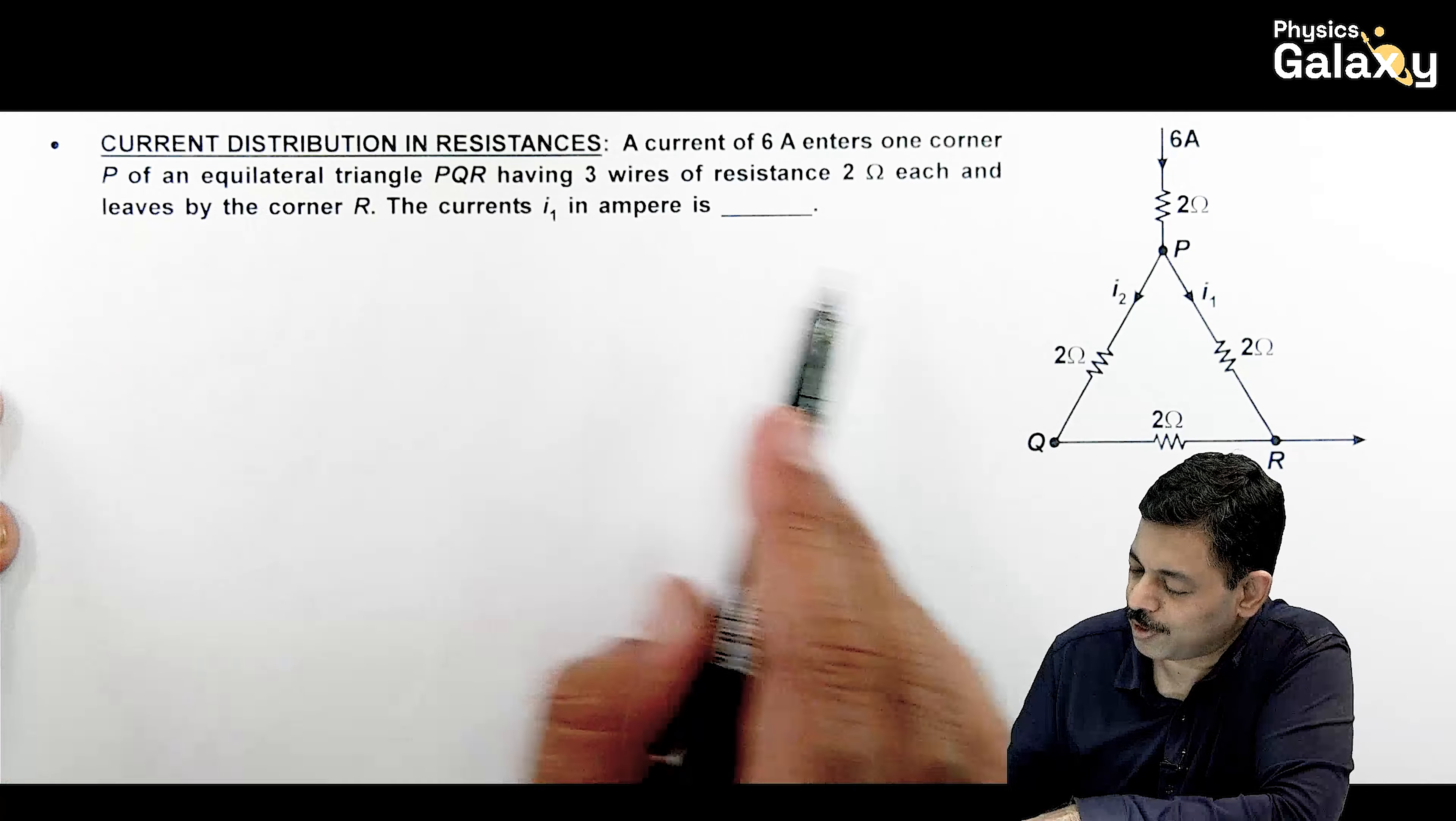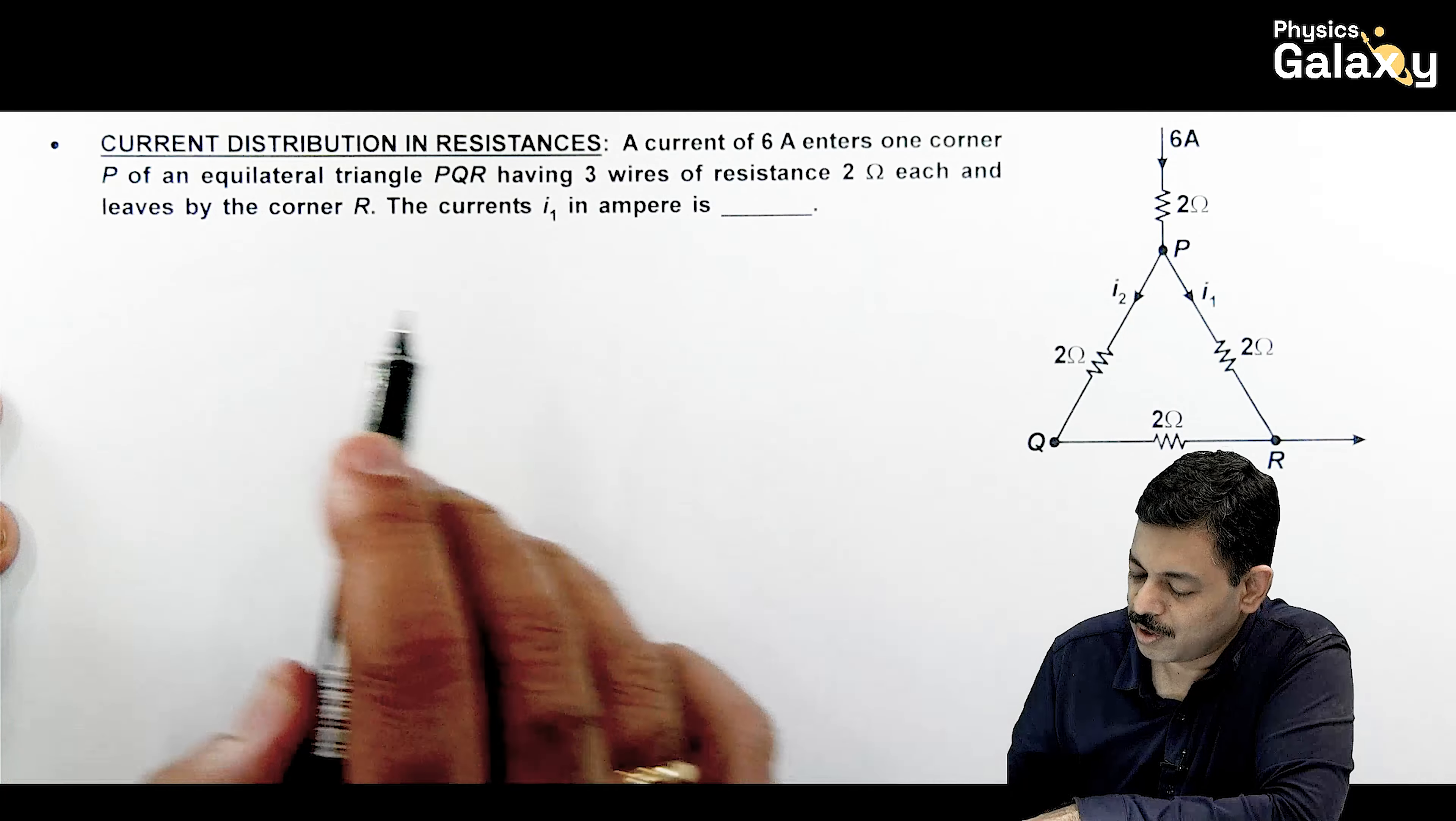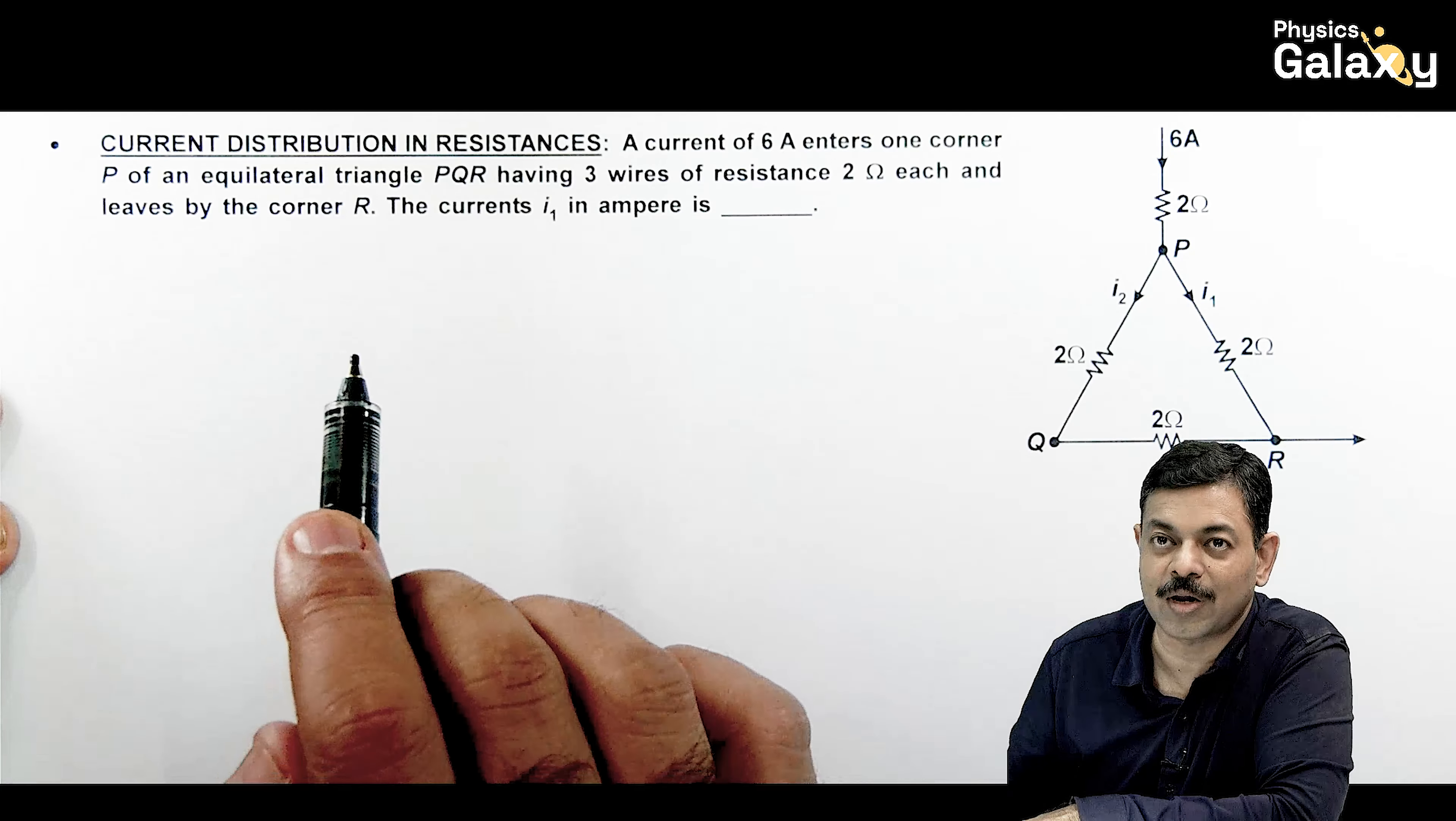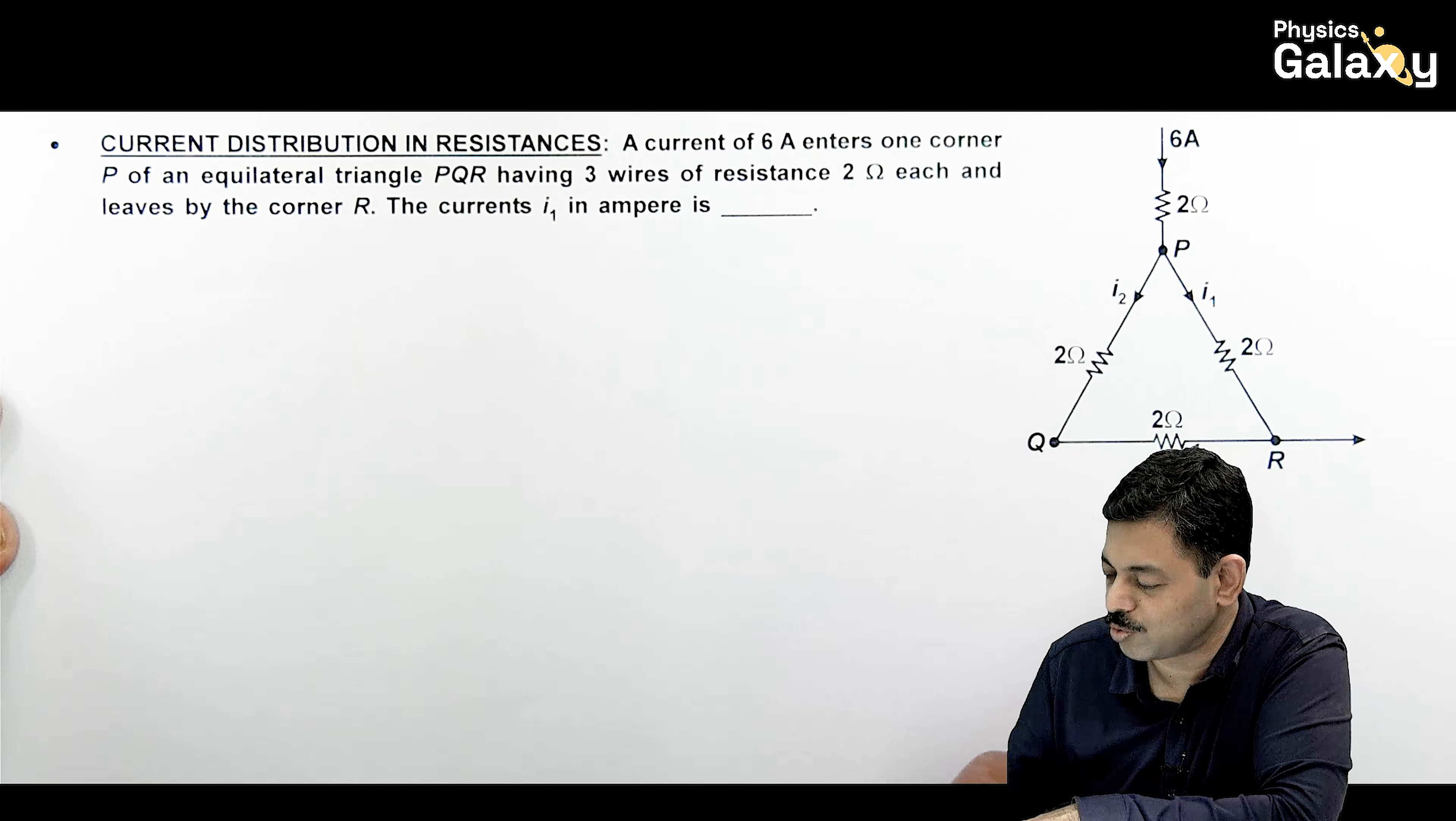Here we will be talking about current distribution in resistances. The question says a current of 6 amperes enters one corner P of an equilateral triangle PQR having 3 wires of resistance 2 ohms each. It is asking the current I1 that leaves at corner R.